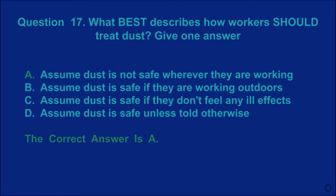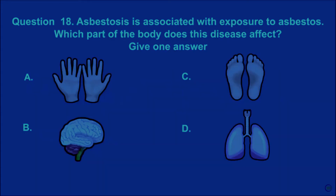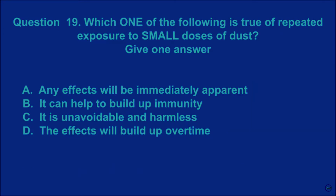Question 18: Asbestosis is associated with exposure to asbestos. Which part of the body does this disease affect? Give one answer. A, B, C, D. The correct answer is D.